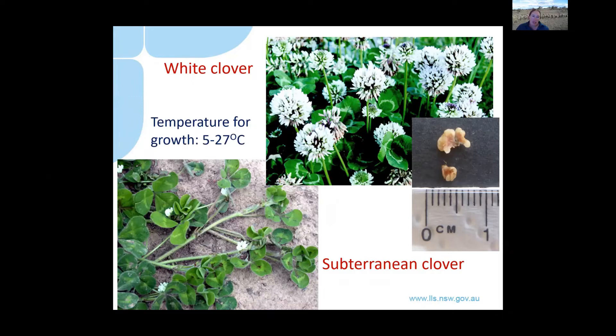These temperate grasses and clovers have a window of when they like growing. If it's below five degrees or above 27 degrees they tend to shut down, whereas the more tropical grasses can continue growing above that 27 degree cap.